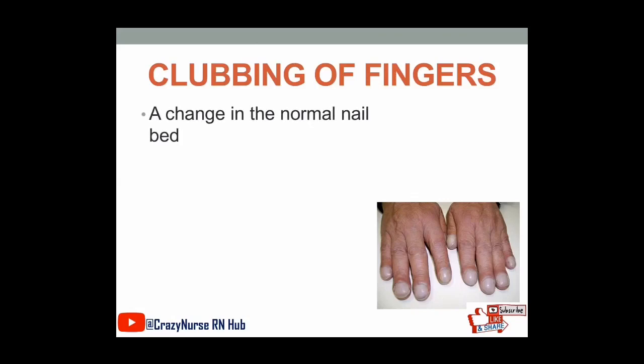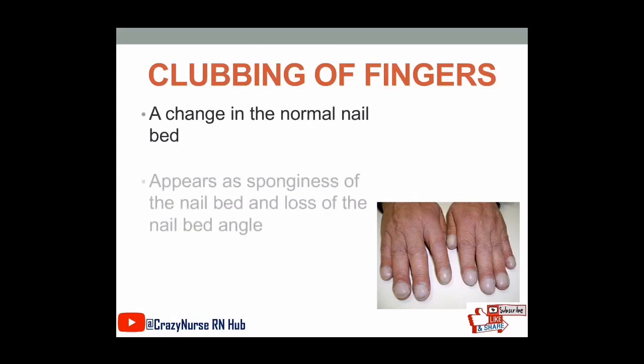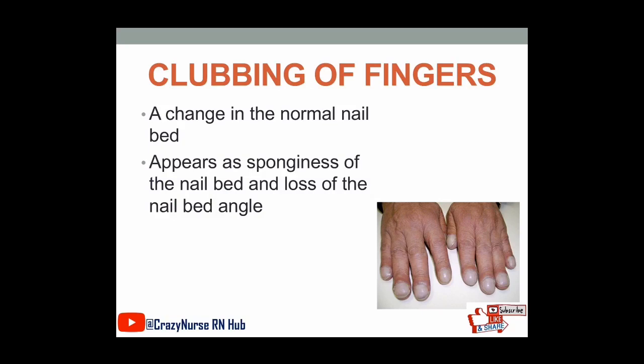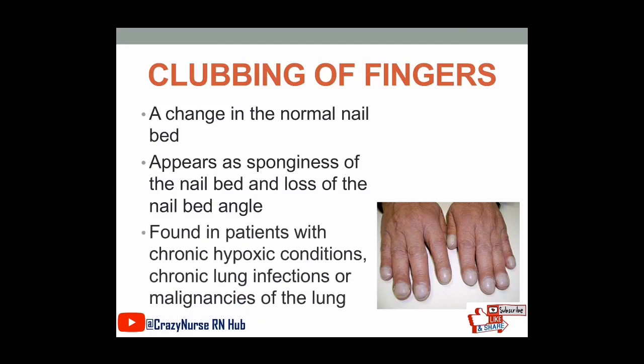Clubbing of fingers is a change in the normal nail bed, and it appears as sponginess of the nail bed and loss of the nail bed angle. It is found in patients with chronic hypoxic conditions, chronic lung infections, or malignancies of the lungs. These are the conditions wherein clubbing of fingers might be assessed or noted.